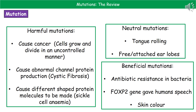Other harmful mutations can cause abnormal channel proteins. Channel proteins go across the cell membrane and allow different things to move from inside the cell to the outside. If that channel protein isn't the normal shape, this process won't take place. An example of where that occurs is cystic fibrosis, where you get really thick sticky mucus that builds up because the protein channel isn't right and therefore the right ions won't be moved.